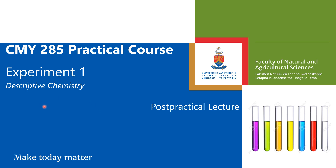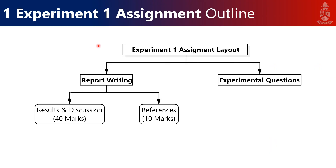Welcome to the post-practical lecture for Experiment 1. In this lecture, we will essentially be looking at the structure of your assignment or assessment for Experiment 1. The broad outline is broken up into two sections: the report writing section and some experimental questions. Both of these count 50 marks, totaling 100 marks for the entire assignment. I'll be focusing mainly on the report writing aspect, because the experimental questions are quite straightforward and you've had time to discuss them in the lab with your demonstrators.